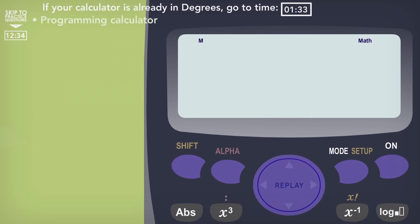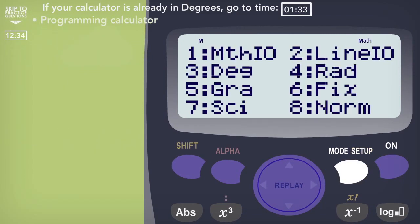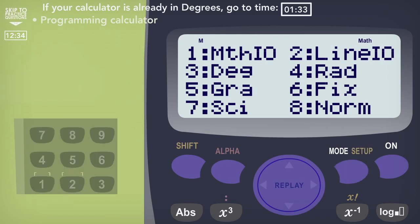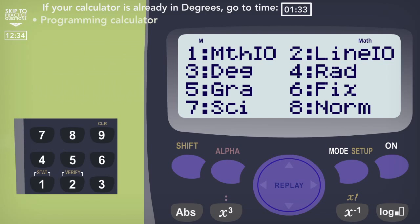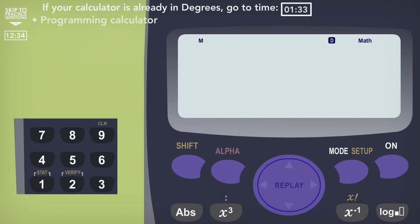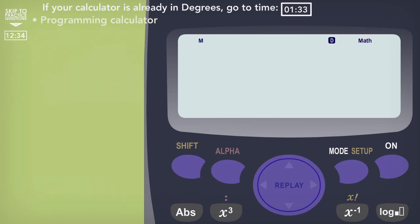You need to press shift, set up, and then the number next to DEG which is short for degrees. On our calculator the number next to DEG is 3. And when you've done this it will take your calculator back to the main screen and you should see the small letter D at the top. You should only need to do this once unless somehow you change it back to radians or gradients.